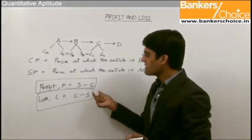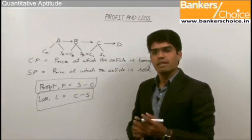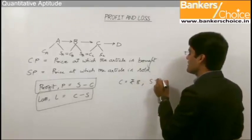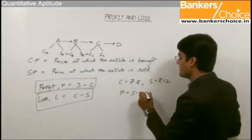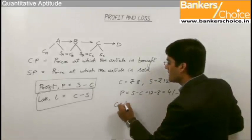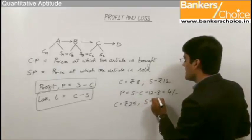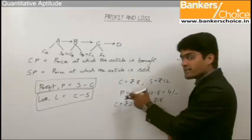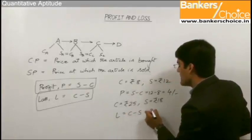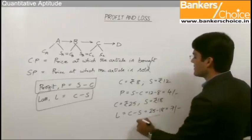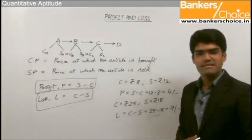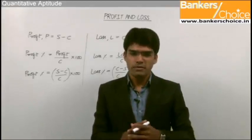For example, if the cost price of a pen is 8 rupees and the selling price is 12 rupees, the profit is S minus C, which is 12 minus 8 equals 4 rupees. Similarly, if the cost price of an article is 25 rupees and the selling price is 18 rupees, since the selling price is less than the cost price it is a loss. The loss L equals C minus S, which is 25 minus 18 equals 7 rupees. This is how profit and loss are calculated in terms of rupees.